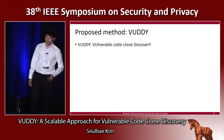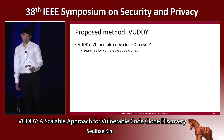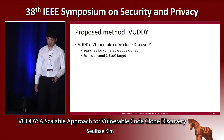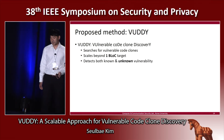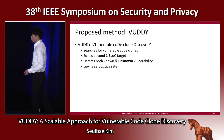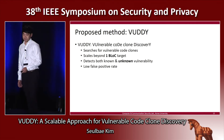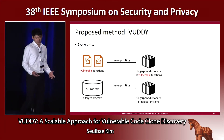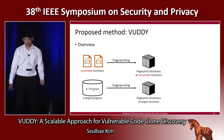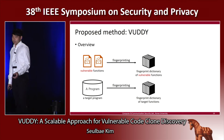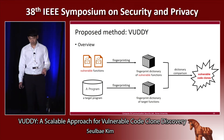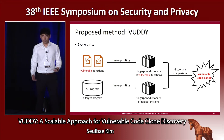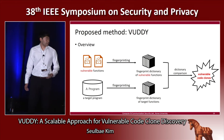VODY aims to search for vulnerable code clones. It scales beyond one billion lines of code in the target. It detects both known and unknown vulnerabilities with a low false positive rate. Here's the overview of VODY: we take a bunch of vulnerable functions and a target program, fingerprint them to generate a fingerprint dictionary of vulnerable functions and a fingerprint dictionary of target functions, and then vulnerable code clone detection becomes a dictionary comparison.